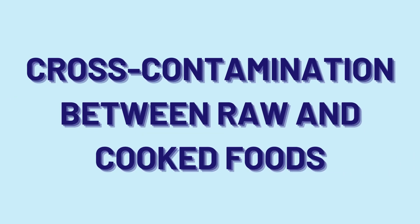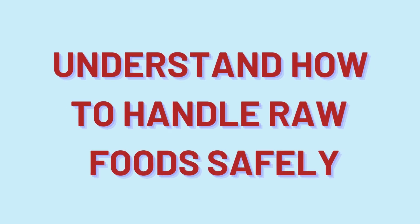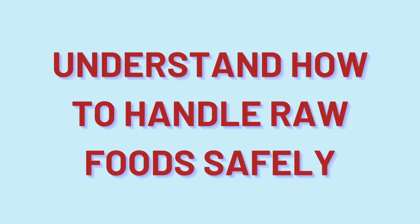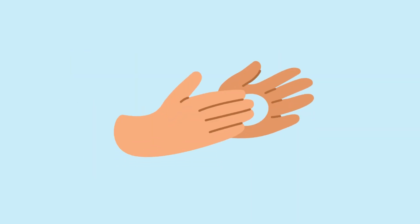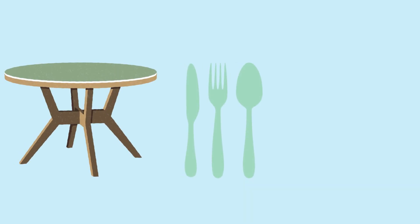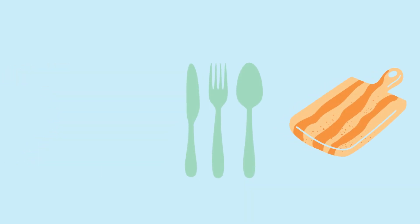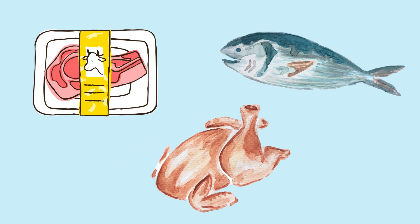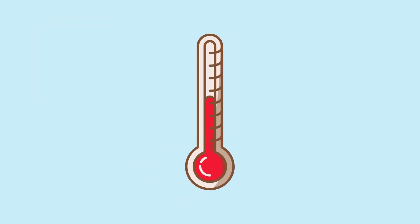Cross-contamination between raw and cooked foods is another major concern, so it's crucial to understand how to handle raw foods safely. One essential practice is washing your hands for at least 20 seconds before and after handling food. Make sure kitchen surfaces, utensils, and cutting boards are kept clean. Store raw meat, poultry, and seafood away from ready-to-eat foods in the refrigerator. Checking food temperatures using a food thermometer is another great way to ensure food safety.